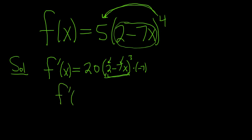Let's clean this up. So f prime of x is equal to... So negative 7 times 20 is negative 140. Then we have 2 minus 7x cubed.